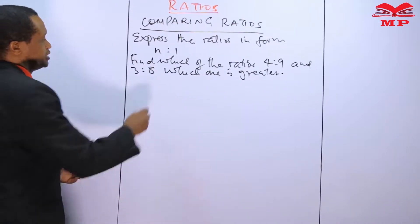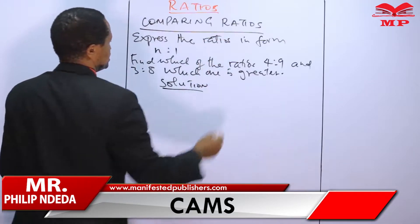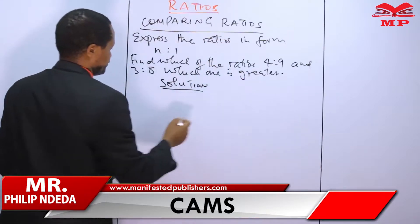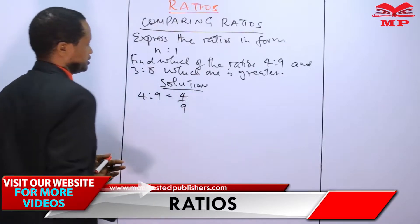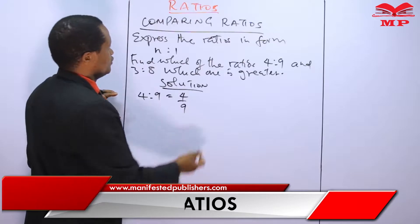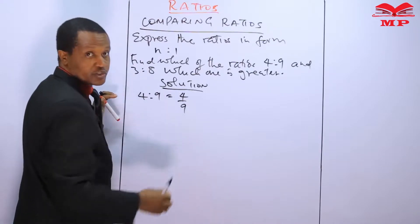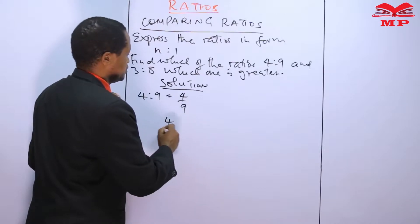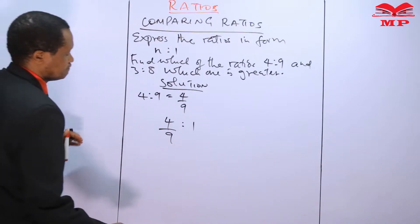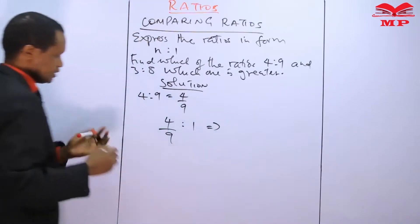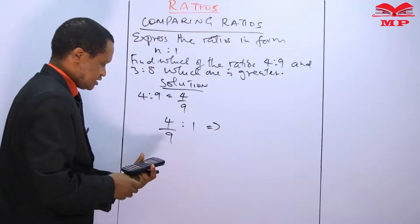Step one: express the ratios in the form N to one. For example, the first ratio, which is four to nine, may be written as four over nine. We can express this ratio in the form N to one, giving us four over nine to one.